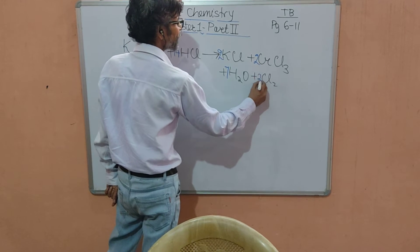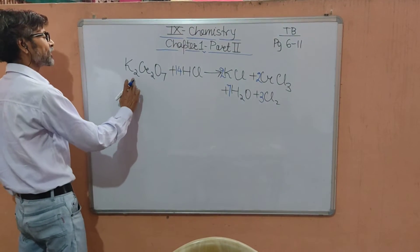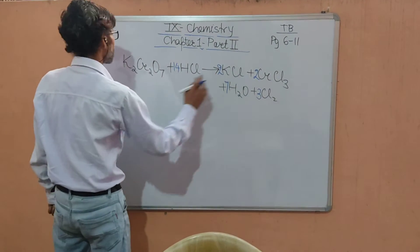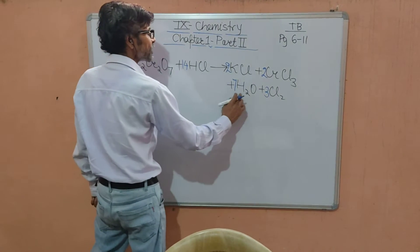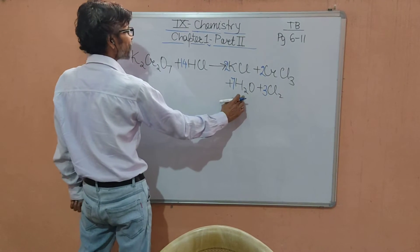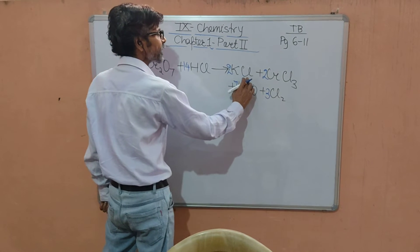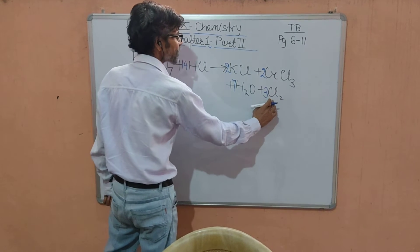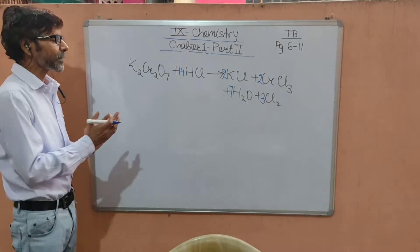Now check here: two potassium, two potassium; two chromium, two chromium; seven oxygen, seven oxygen; 14 hydrogen, 14 hydrogen; 14 chlorine, two chlorine plus six, eight chlorine, plus six, 14 chlorine. So the equation can easily be balanced. Purposefully I have taken a big equation to balance.